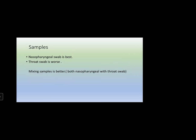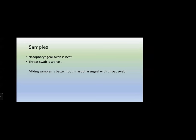What samples should we go for in diagnosing COVID-19? Nasopharyngeal swab is the best; throat swab is worse. Among all samples, nasopharyngeal swab or nasopharyngeal aspirate can be taken, and even blood sample can be taken. Mixing the samples is better — if you take both the nasopharyngeal and throat swab, mix them together, you can get a more sensitive result and a higher yield of the virus.